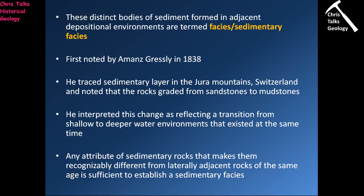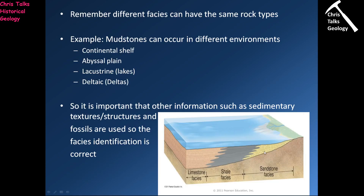Any attribute of sedimentary rocks that makes them recognizably different from laterally adjacent rocks of the same age is sufficient to establish a sedimentary facies. We have three laterally adjacent environments operating at the same time: a sand facies, a mud facies, and a limestone or carbonate facies. Each one produces its own distinct sediment, and we can use those to define that particular facies.